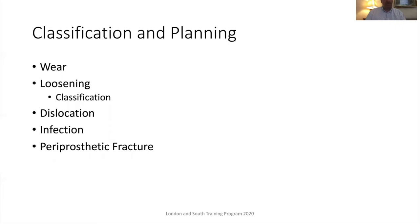When considering what sort of revisions we're doing, it's unusual for the femoral side — it's often going to be the acetabular side that you may want to revise. We'll concentrate quite a bit on loosening and its classification and how that will affect what sort of surgery you undertake. But there may be other reasons to undertake a femoral revision, including dislocation, infection, and periprosthetic fractures.